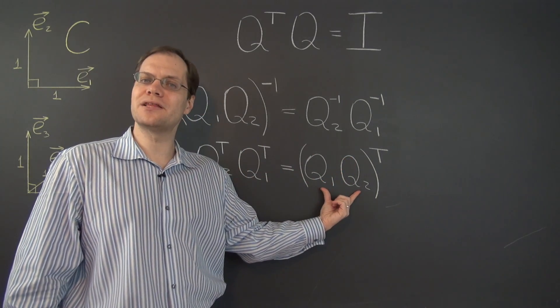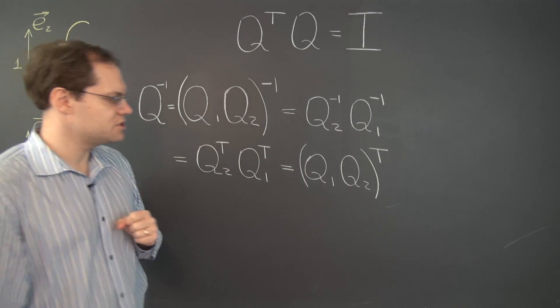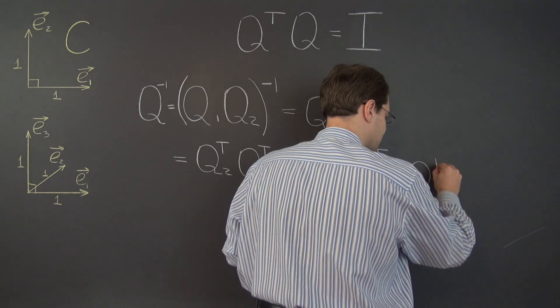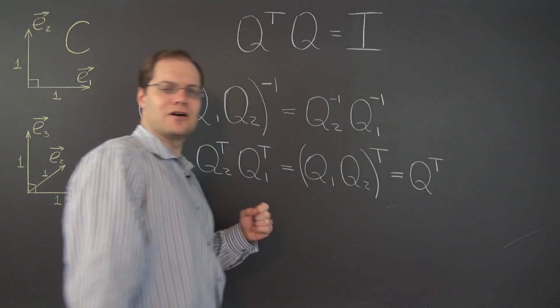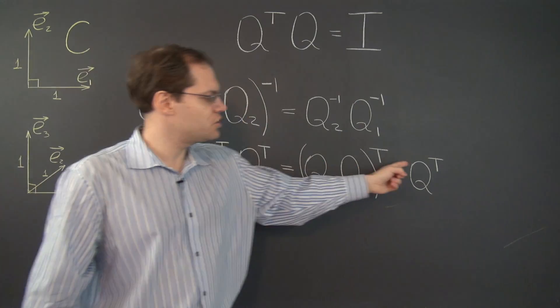And now, lo and behold, in parentheses we have Q1 Q2, which we called Q originally. So what we have here is Q transpose. So our ultimate conclusion is that Q inverse is Q transpose.